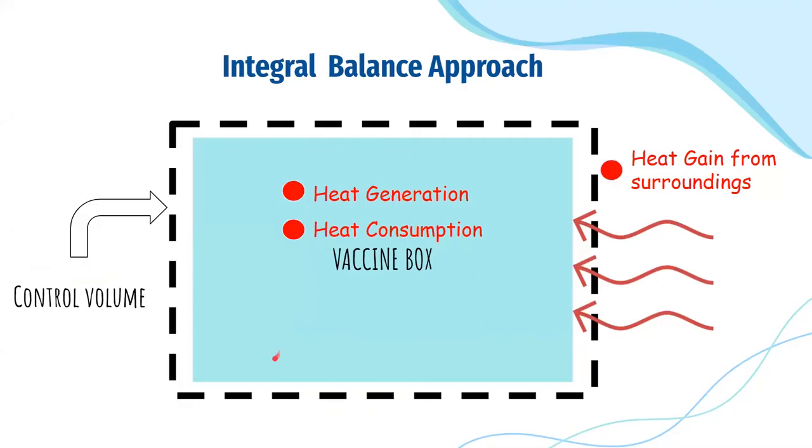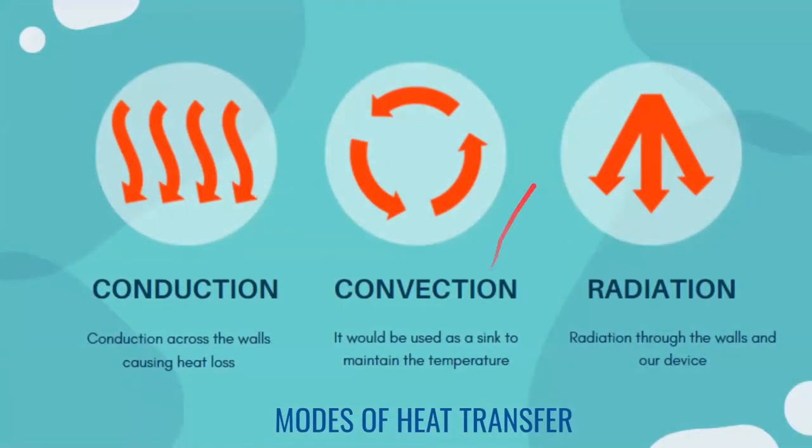Now, let us check the calculations which we have done. So, the first one is the integral balance approach. So, here we have taken the whole vaccine box as the control volume and for this control volume, there is the inward heat flux from the surroundings to the vaccine box. There is heat generation which takes place due to the Peltier cell and there is the heat consumption in the vaccine box. And overall, we know the heat gain equals the heat loss.